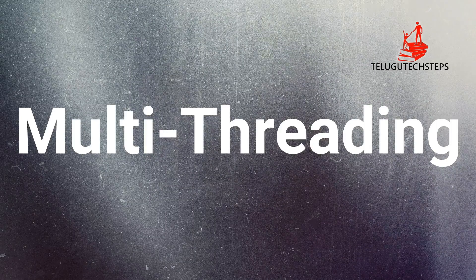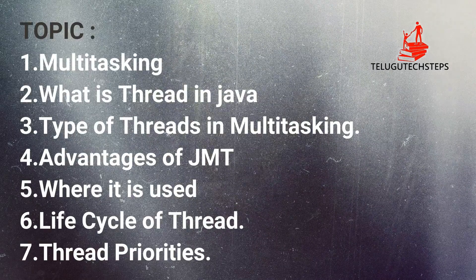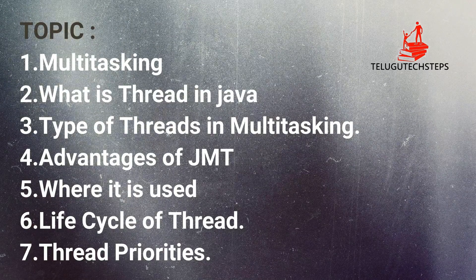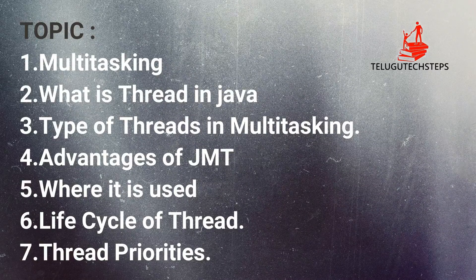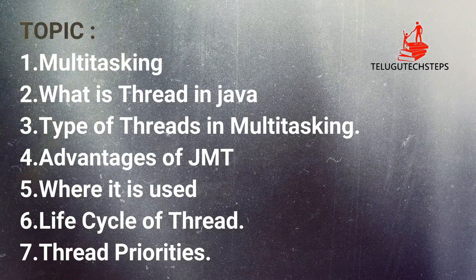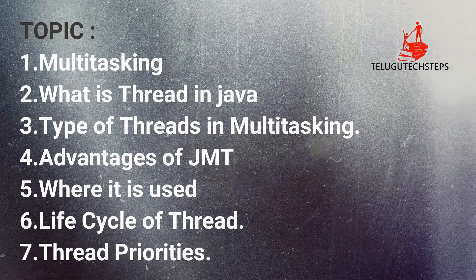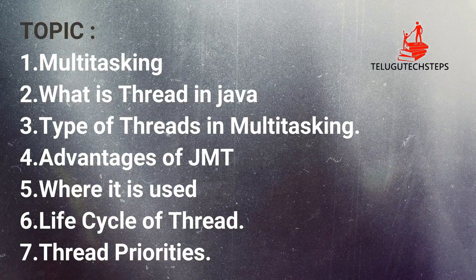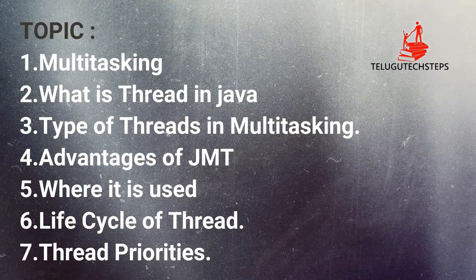The seven topics are: what is multi-tasking, what is a thread in Java, types of threads in Java, multi-tasking and advantages of Java multi-threading, where Java multi-threading is used, lifecycle of the thread, and finally the priority of threads. The priority of threads is an important concept for the next class.